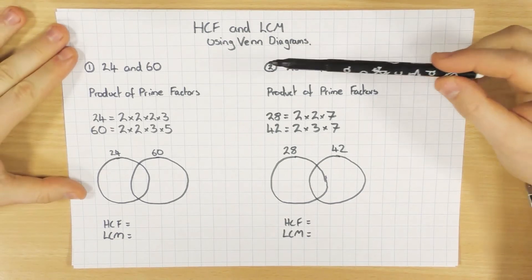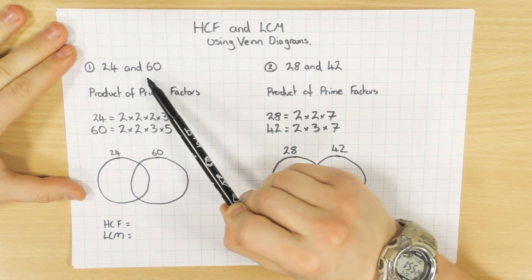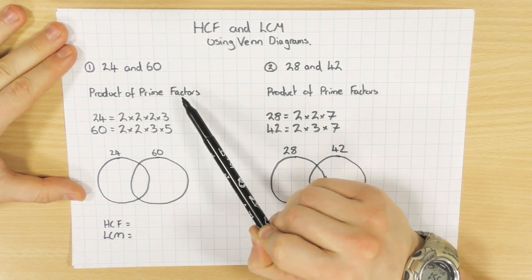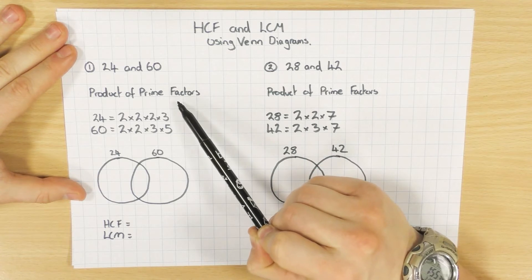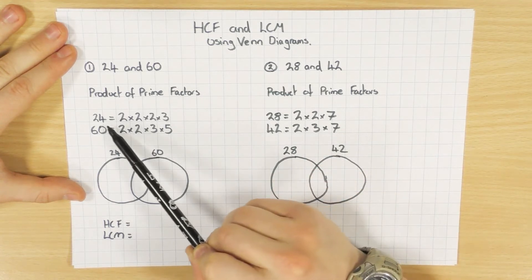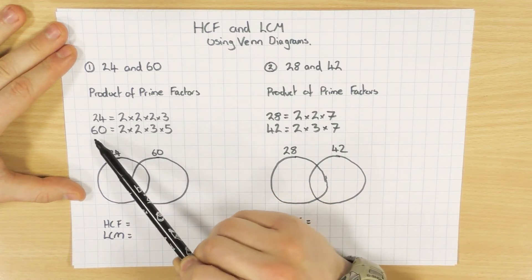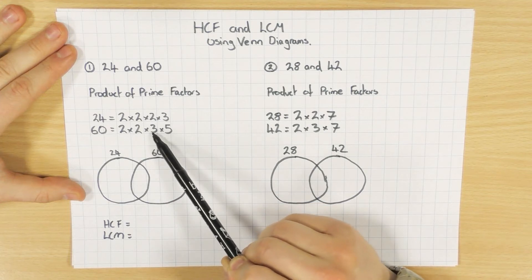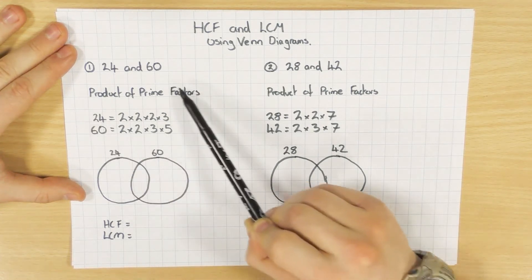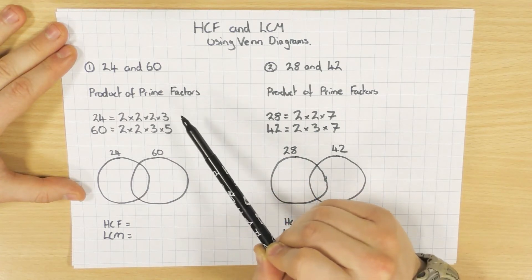In one of my other videos we looked at how to put the numbers 24 and 60 and we broke them down to a product of their prime factors. If you don't know how to do that, just go back to my previous video. 24 was 2 × 2 × 2 × 3 and 60 was 2 × 2 × 3 × 5.